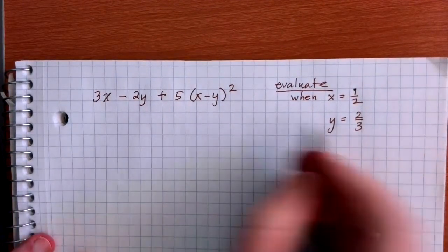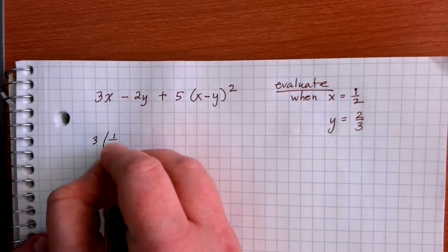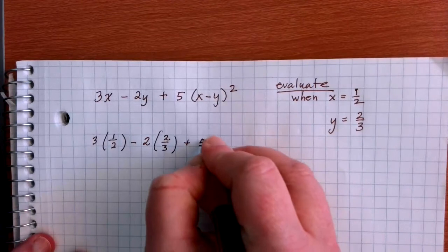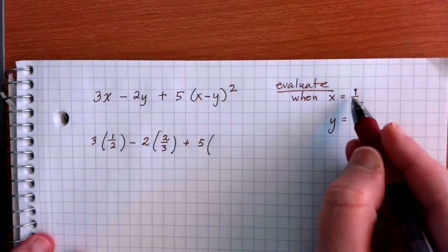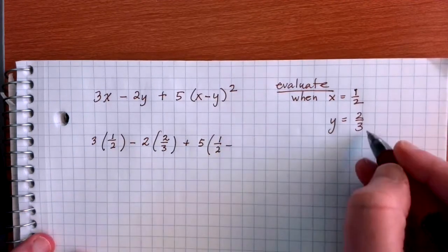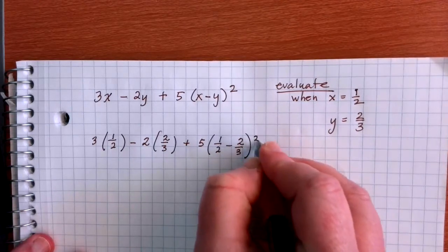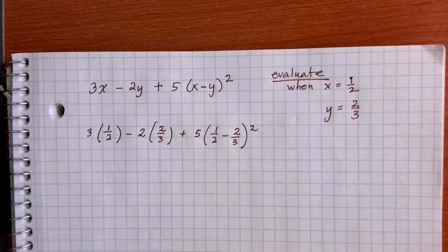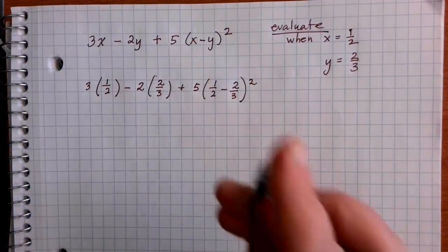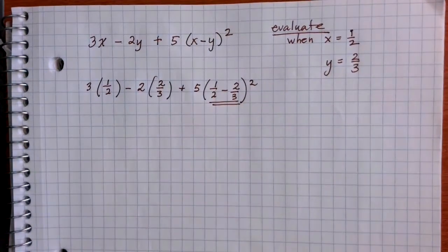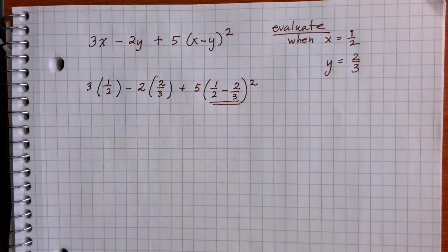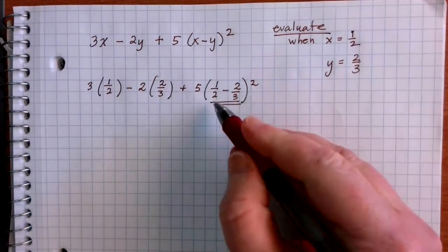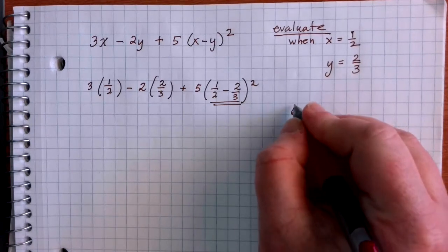Let's plug our values in. I have 3 times one-half, minus 2 times two-thirds, plus 5 times, in parentheses, x minus y — so one-half minus two-thirds — squared. Order of operations says we start with parentheses, so I need to do one-half minus two-thirds. This is a subtraction with fractions; I need a common denominator between 2 and 3. Six works great, so let's work on that off to the side with 6 as our common denominator.